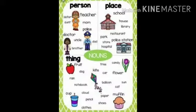You can see clearly. In the case of persons, there is a picture of a teacher, police, and a doctor. In the case of place, there is a school and a police station.